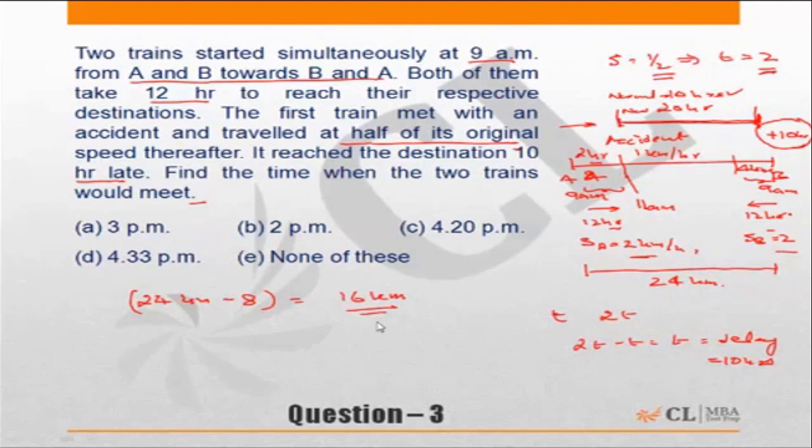Now 16 kilometers have to be covered by the two trains at the speeds of 2 kilometers per hour and 1 kilometer per hour, because after the accident the first train will move at half the normal speed. So the effective speed is 2 plus 1.